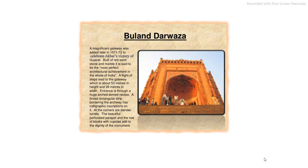This is the Buland Darwaza. This is a magnificent gateway which was added in 1571–72 to celebrate Akbar's victory of Gujarat. Buland Darwaza is built of red sandstone and marble. It is said to be the most perfect architectural achievement in the whole of India. A flight of steps leads to the gateway, which is about 53 meters in height and 39 meters in width. Entrance is through a huge arched dome recess. A broad rectangular strip bordering the archway has calligraphic inscriptions on it. At the corners are slender turrets, the beautiful perforated parapet and the row of kiosks with cupolas added to the dignity of Buland Darwaza.